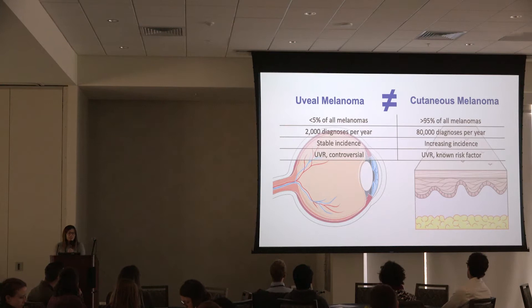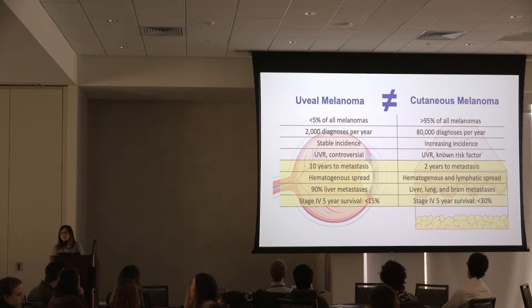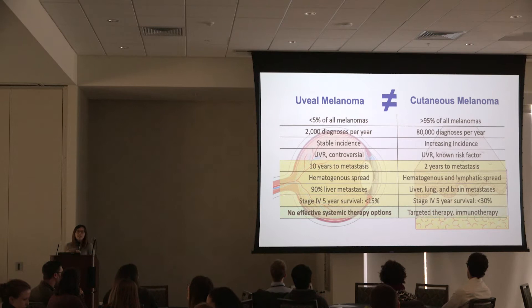In terms of epidemiology, uveal melanoma is quite rare compared to cutaneous melanoma. In terms of metastatic behavior, uveal melanoma has a propensity to metastasize to the liver preferentially, and has a poor five-year survival compared to metastatic cutaneous melanoma. This is most likely due to the fact that there are currently no effective systemic therapy options for metastatic uveal melanoma patients.